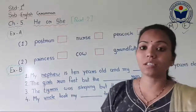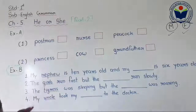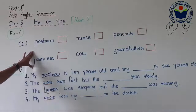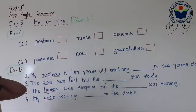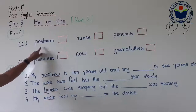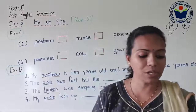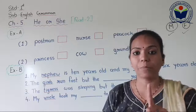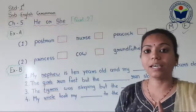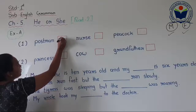Without wasting time, please take your pencil and let's start Exercise A. I have written only the words here, as there are no pictures drawn on this board — the same words you can see in your grammar textbook. Postman — P-O-S-T-M-A-N. Can you tell me? Postman is the naming word for male or female?